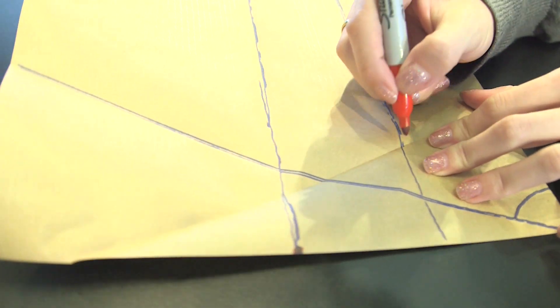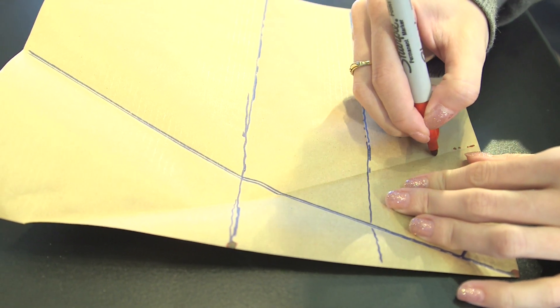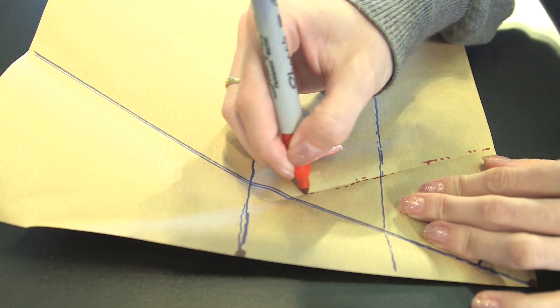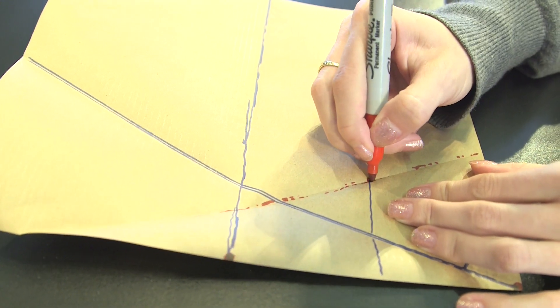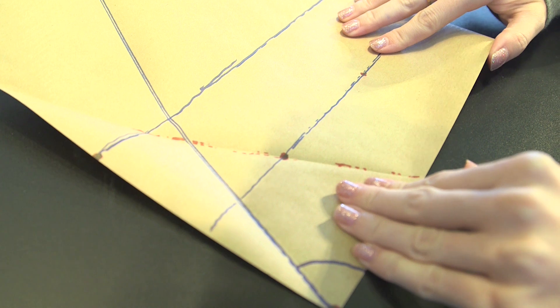And another important point to mark is where this crease that I just created with this last fold, where that intersects the bottom line. So you might already see where this is going.